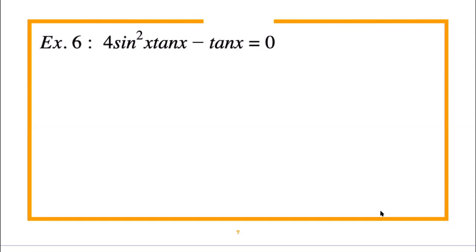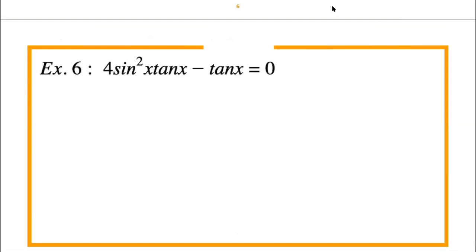Example six: 4sin²x·tan(x) − tan(x) = 0. What are people's strategies? One option is to convert everything to sine and cosine. Another strategy — factoring — is also a good idea. Someone suggests subtracting 4sin²x, but that's not valid because it's attached to the tangent by multiplication, not addition.